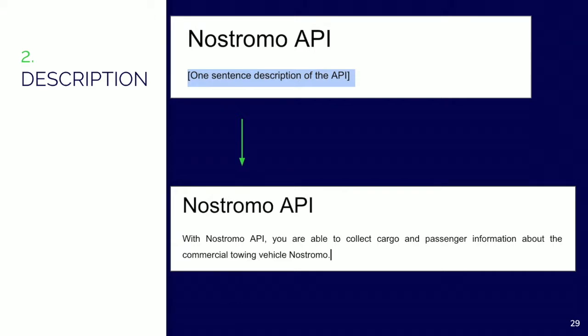Very often it comes from the API definition file. However, the technical writer can extend it as necessary. So here, at the top of the page, you can see the writing prompt in brackets: 'one sentence description of the API.' And the actual description is: 'With Nostromo API you are able to collect crew and passenger information about the commercial travel vehicle Nostromo.'